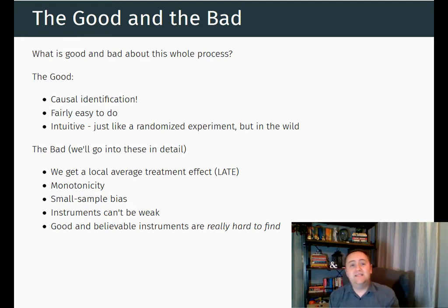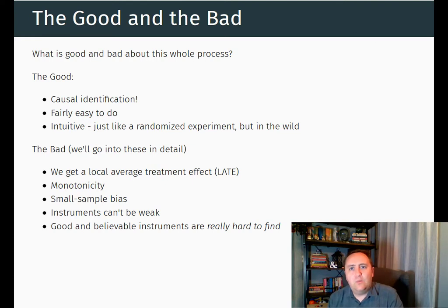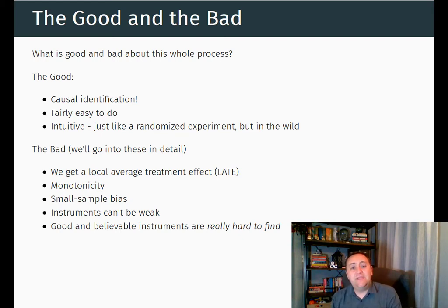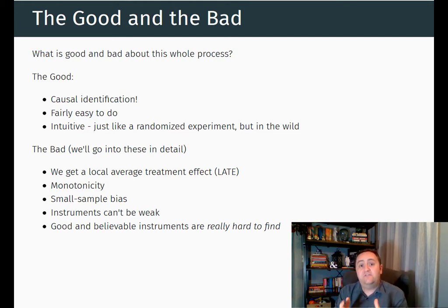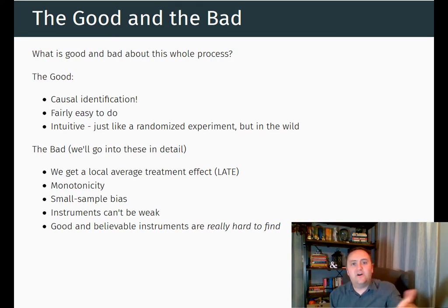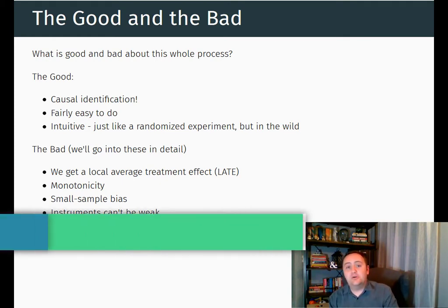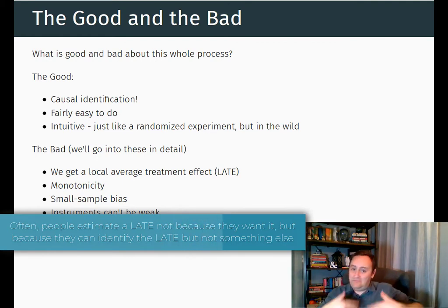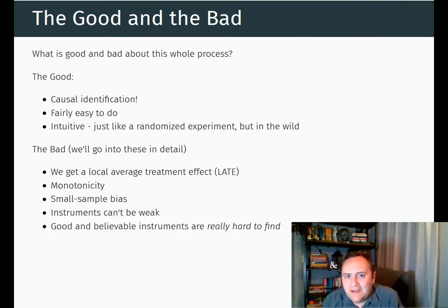What the local average treatment effect gives us is the effect among people who can be affected by the instrument — who are strongly affected by the instrument. Unless you're going to use the instrument to assign people to go into the military, that's probably not what you're interested in. If you want to know the effect on people who currently voluntarily go into the military, but you're using an instrument based on involuntarily going into the military because of your draft number, then you're not getting the effect that you want. Sometimes the local average treatment effect is just fine — if you're going to use the draft again to send people into the military. But often it's not what you want.